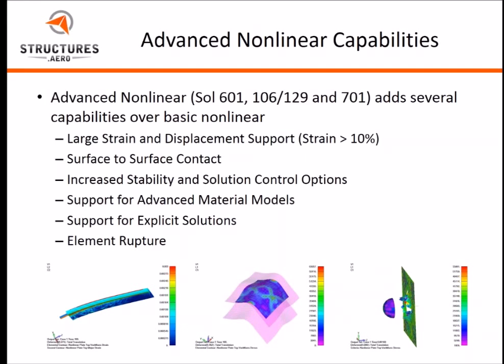There are a lot more stability and solution control options available in the advanced nonlinear package. There is also support for advanced material models — hyper-elastic material models, strain-rate-dependent materials, and several other advanced material models. Another major area is support for explicit solutions, which will typically be used for high-speed or impact-type problems, which we'll be demonstrating a little bit later today.